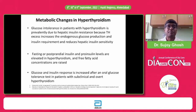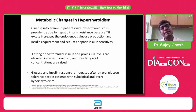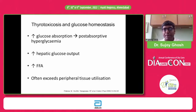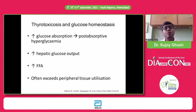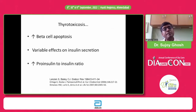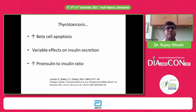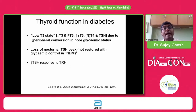In summary, this is what happens if you have thyrotoxicosis on glucose homeostasis: one, excess glucose reabsorption; two, excess hepatic glucose output; three, excess free fatty acid; and four, excess peripheral utilization. Additionally, there might be beta cell apoptosis, variable effect on insulin secretion, and increase in pro-insulin to insulin ratios. I have already mentioned the sick euthyroid syndrome when somebody has diabetes.